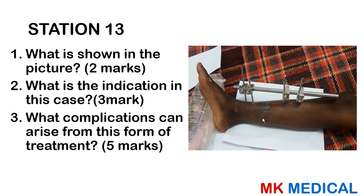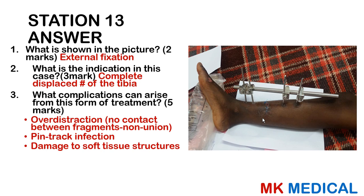Station 13: The image shows external fixation for a completely displaced open fracture of the tibia, with suturing visible. Complications include over-distraction where there is no proper contact between fracture segments leading to non-union, pin tract infections, and damage to soft tissue structures when inserting the pins.